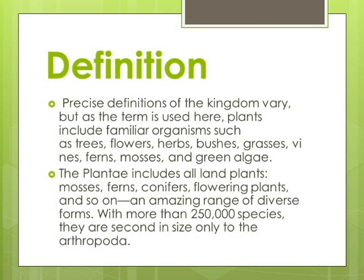Precise definitions of the kingdom vary, but as the term is used here, plants include familiar organisms such as trees, flowers, herbs, bushes, grasses, vines, ferns, mosses, and green algae. The Plantae includes all land plants — mosses, ferns, conifers, flowering plants, and so on — an amazing range of diverse forms. With more than 250,000 species, they are second in size only to the Arthropoda.